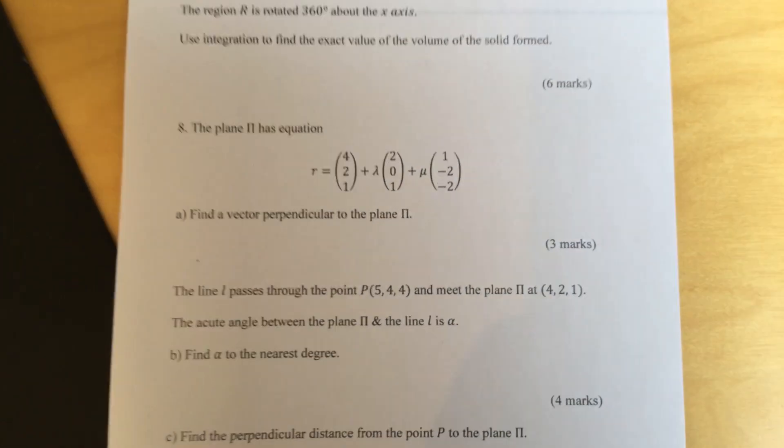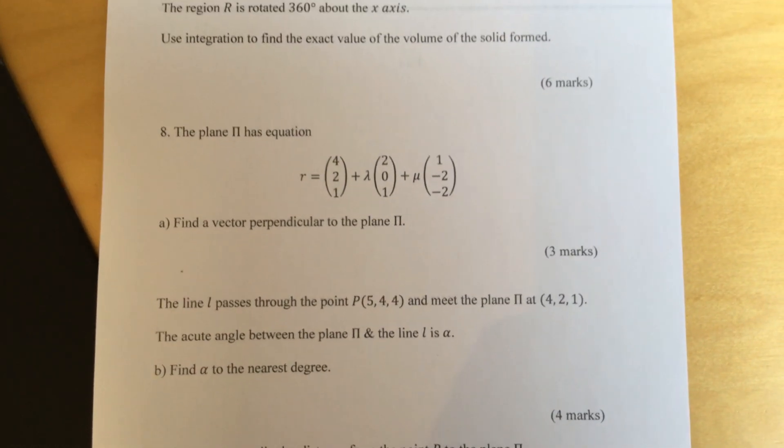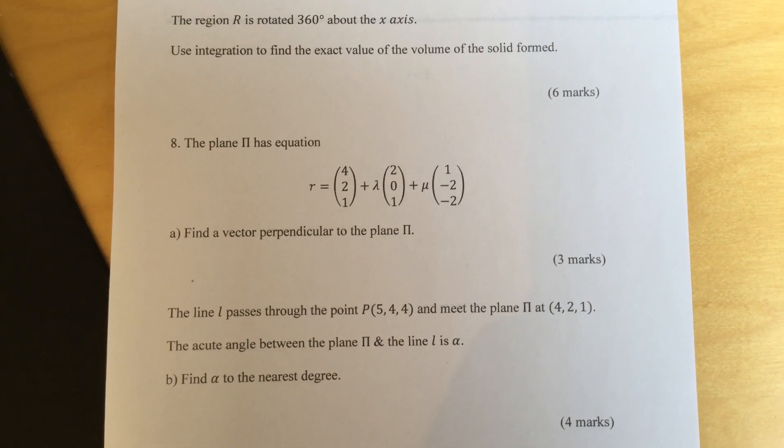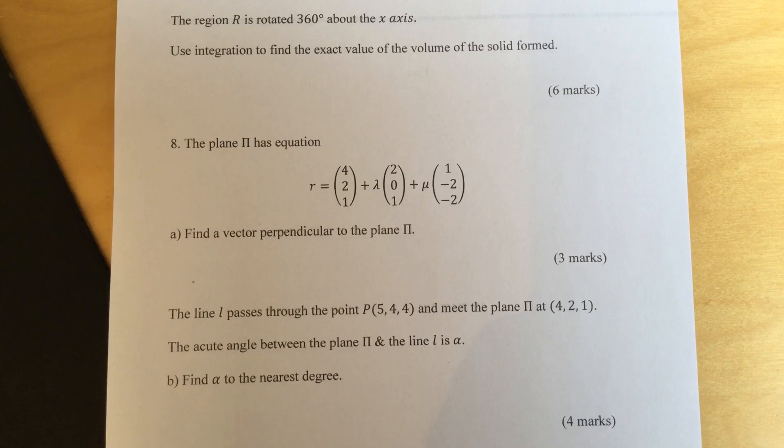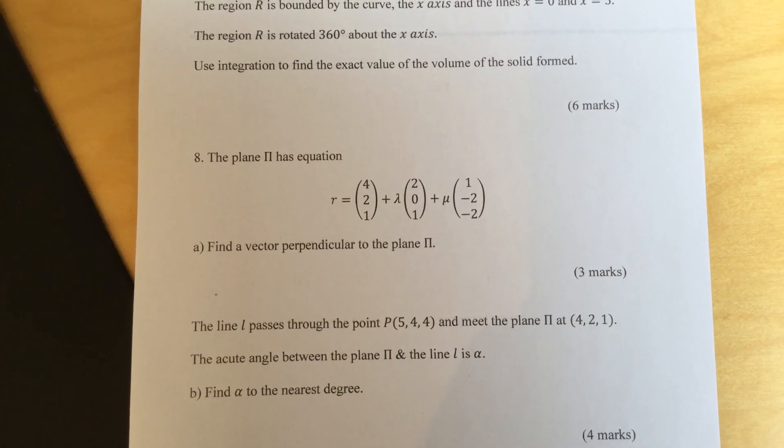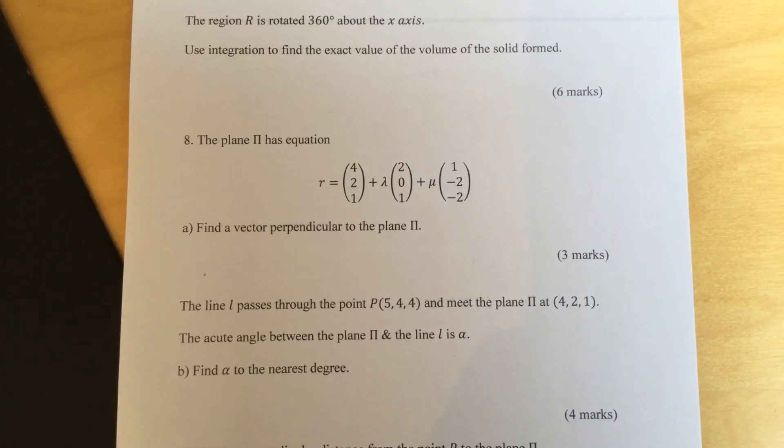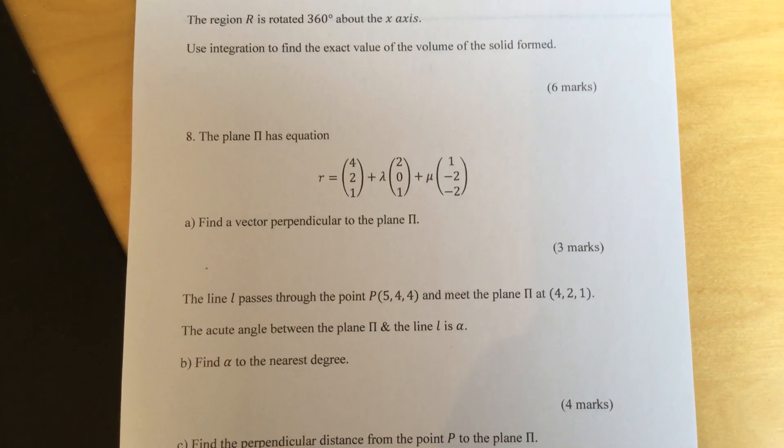Question eight. The plane π has equation r equals (4, 1) plus λ(2, 0, 1) plus μ(1, -2, -2). Part a, find a vector perpendicular to the plane π.